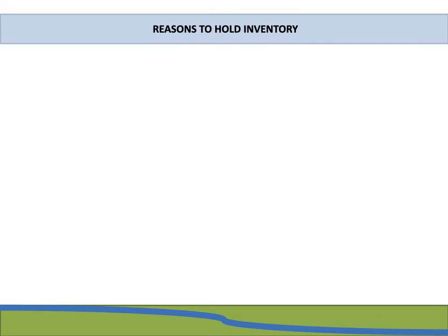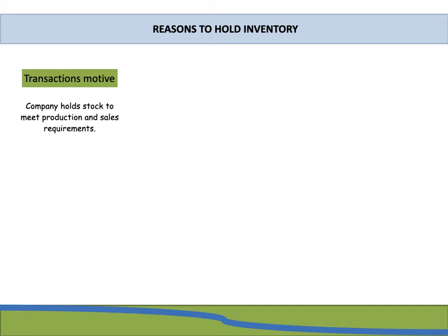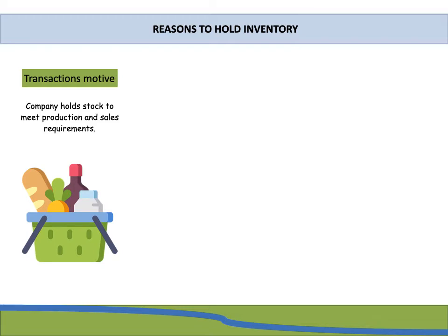Good day and welcome to the presentation on economic order quantity. We're going to start off by looking at what are the reasons a company would want to hold inventory. The first reason would be your transactions motive - this is where a company holds stock to meet production and sales requirements. An example of this would be a store such as Pick and Pay, where they hold products on their shelves so that customers can come in and pick what they want.